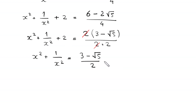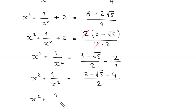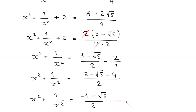Moving the 2 to the right hand side and taking the LCM of 2 and 1: x squared plus 1 over x squared equals (3 minus √5) over 2 minus 2, which gives (3 minus √5 minus 4) over 2 equals (negative 1 minus √5) over 2. Let's call this equation 1.